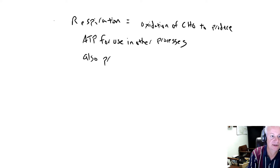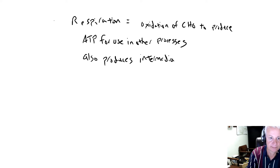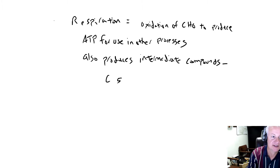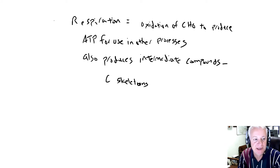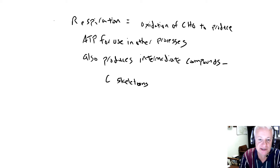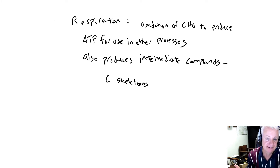Respiration also produces intermediate compounds, often called carbon skeletons. So not only does respiration produce ATP energy that can be used for energy-requiring reactions, it also produces carbon skeletons — compounds that are used as building blocks for other chemical constituents.